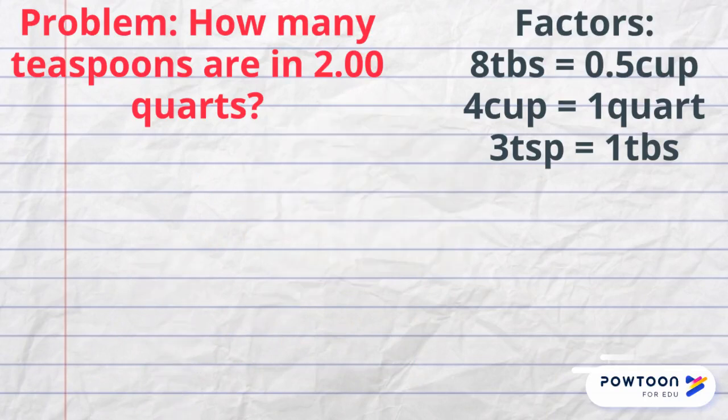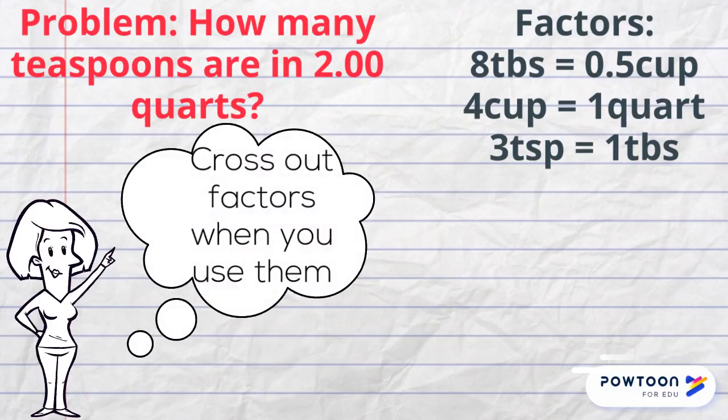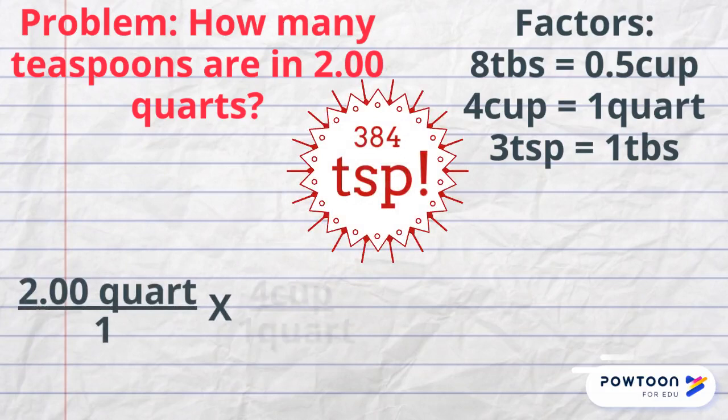Another pro tip for dimensional analysis is to cross off the factors that you have used when using multiple factors. If you reuse a factor, you'll go in the wrong direction. The answer to this problem is 384 teaspoons.